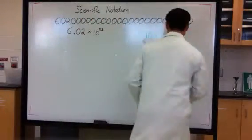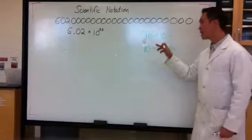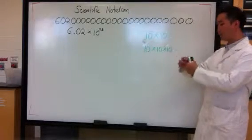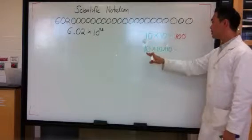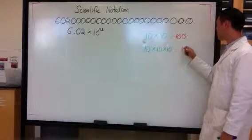So how does it work? Let's take a look over here. 10 times 10 is equal to 100. 10 times 10 times 10 is equal to 1,000.